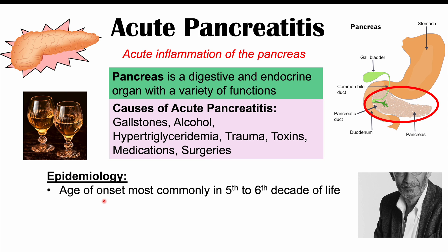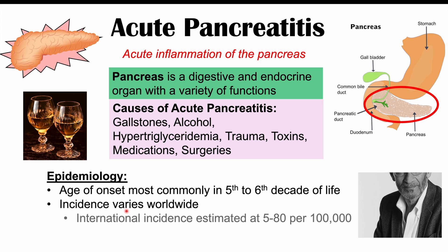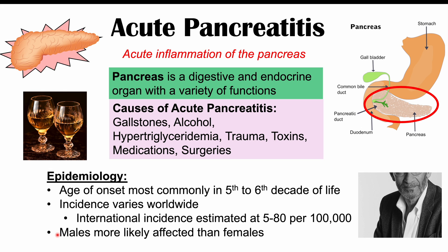The age of onset of acute pancreatitis is most commonly in the fifth to sixth decade of life. The incidence varies worldwide, with international estimates ranging from 5 to 80 per 100,000. Western countries often have higher rates, likely due to higher alcohol consumption, and males are more likely to be affected than females.